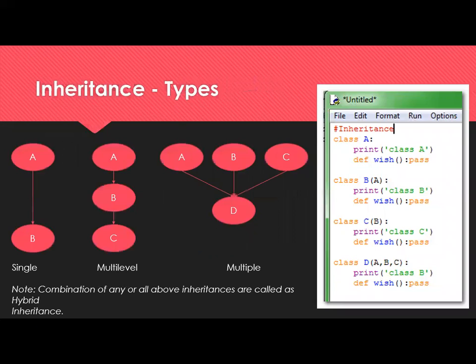Inheritance types. As we know the basic types, we can see them one by one. In single inheritance, we have class A and class B — class A is the parent and class B inherits the properties and features of class A. It is single inheritance because we have only one level. If we have multiple levels, say class A is inherited by B and class B is inherited by C, that is multi-level inheritance.